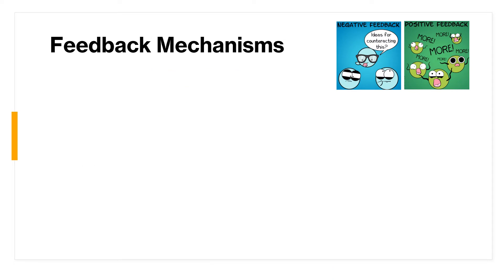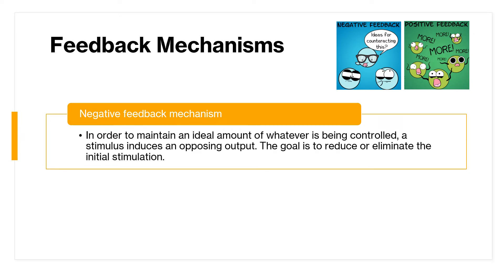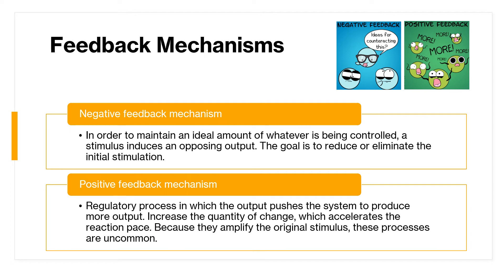There are two types of feedback mechanism: negative feedback and positive feedback. In negative feedback, a stimulus induces an opposing output in order to maintain an ideal amount of whatever is being controlled; the goal is to reduce or eliminate the initial stimulation. In positive feedback, the regulatory process pushes the system to produce more output, increasing the quantity of change and accelerating the reaction pace by amplifying the original stimulus.